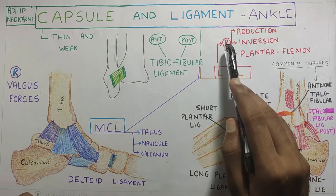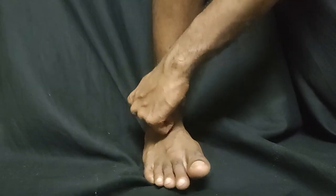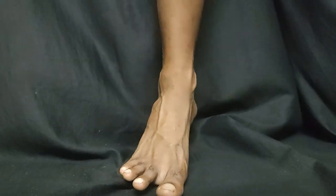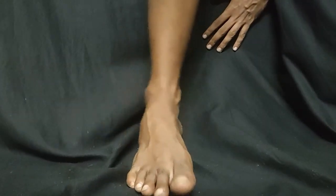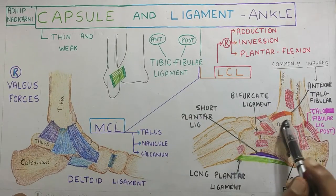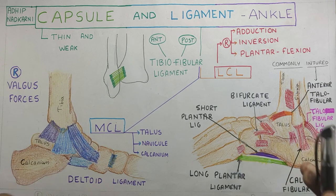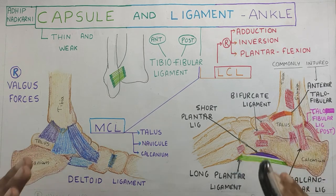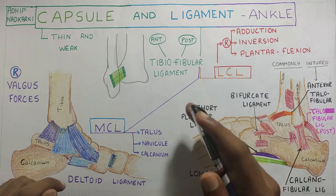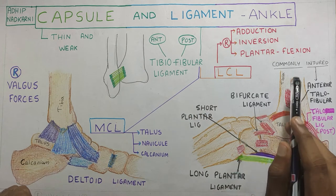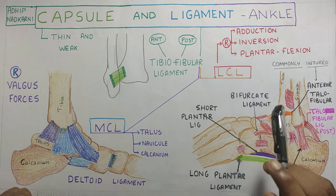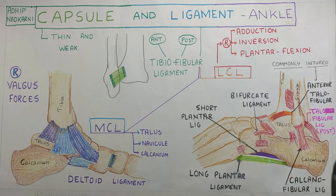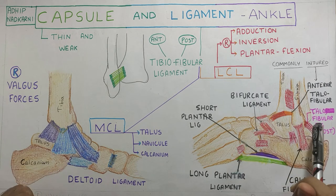The LCL ligament provides resistance against adduction, inversion, and plantar flexion. This type of injury is very commonly seen in sports like football and basketball where there is a lot of landing on the foot. The most commonly injured LCL ligament is the anterior talofibular ligament, very commonly known as the ankle sprain, and the treatment varies with each degree of sprain. The least injured ligament is the posterior talofibular ligament, which is the strongest among the three.